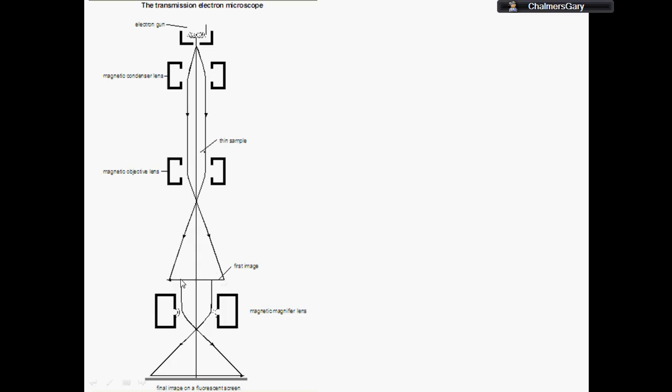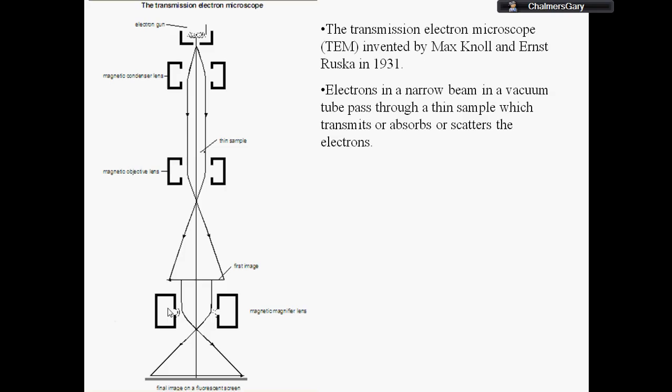And then the magnetic magnifying lens does what it says on the tin really, it makes the image bigger. The transmission electron microscope was invented by Knoll and Ruska in 1931. It uses these narrow beams of electrons in a vacuum tube because obviously you don't want it to interact with air molecules and be scattered at all.